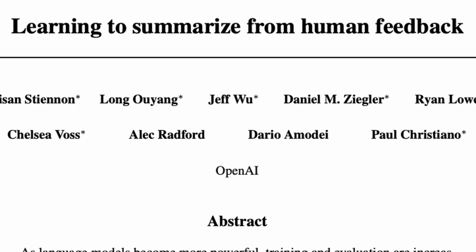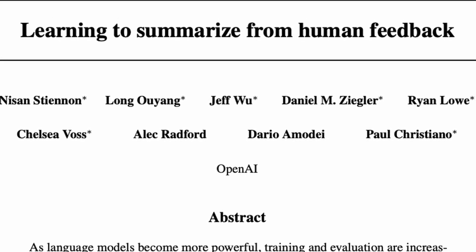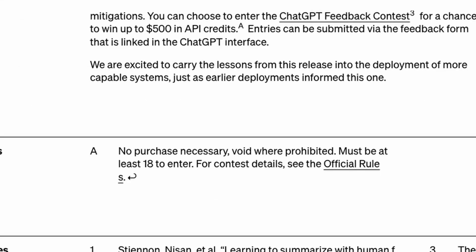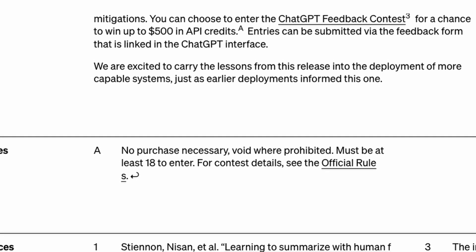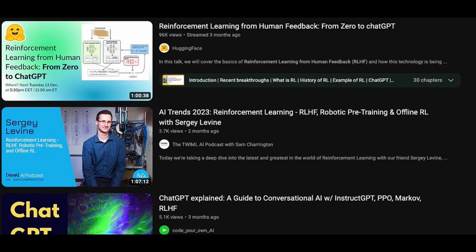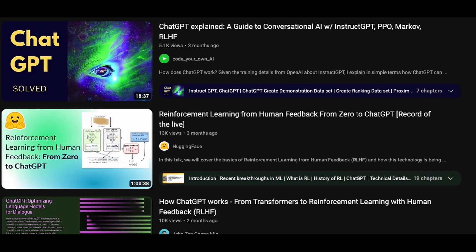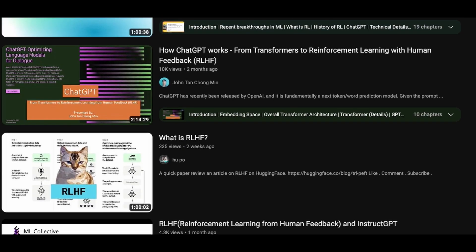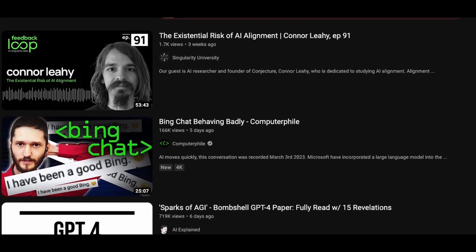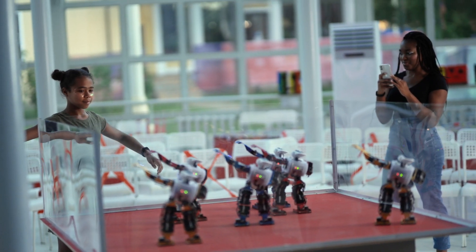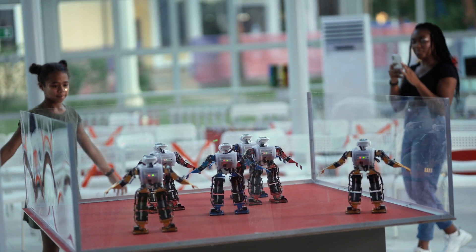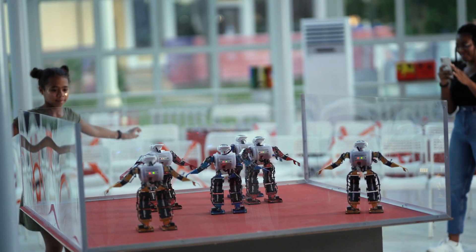We did a deep dive into the literature on reinforcement learning from human feedback, or RLHF for short. There's an amazing 2020 NeurIPS article, 'Learning to Summarize from Human Feedback,' cited by the ChatGPT blog post that you just can't miss. RLHF teaches a computer system — known as the agent — how to make better decisions in various situations, guiding it by providing feedback on its actions.